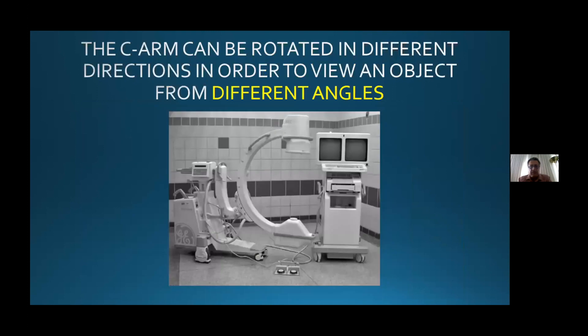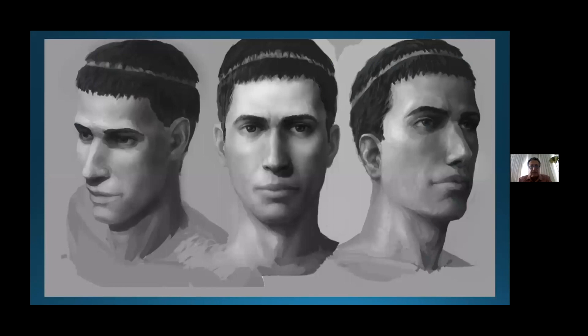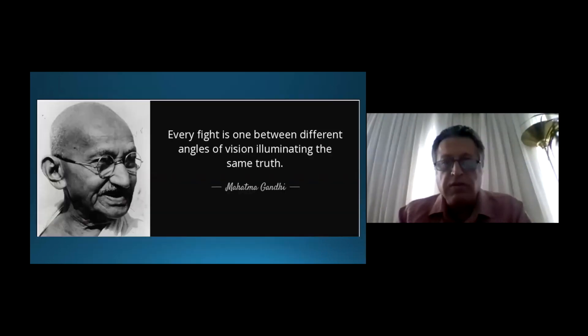We must use fluoroscopy with all angles — different angles. It's crucial. The AP, lateral, and sometimes oblique views each give us different information. Different angles give us different points of view, like some artist or even some toys. The fluoroscopic image is a shadow, and we must have a correct shadow for good needle placement and good instrument placement. As Mahatma Gandhi said, every fight is one between different angles of vision, illuminating the same truth.